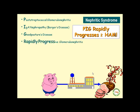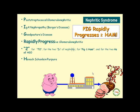The 'rapidly progresses' stands for rapidly progressive glomerulonephritis. The number two in the mnemonic can stand for the two entities of PEG and HAM, or the two Hs in H2O. H of HAM stands for Henoch-Schönlein purpura. A stands for Alport syndrome, the autosomal recessive kidney disease. And M stands for membranoproliferative glomerulonephritis.